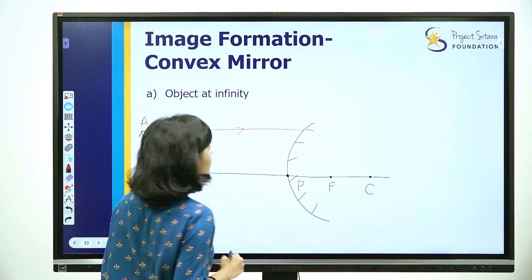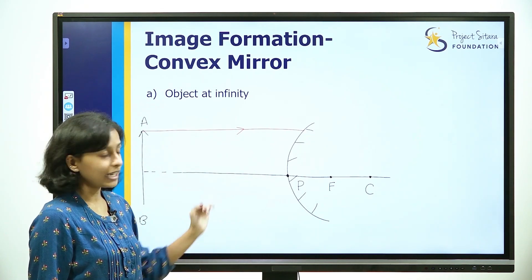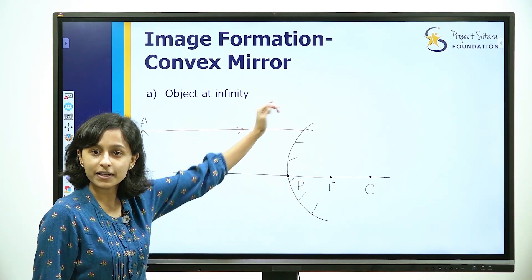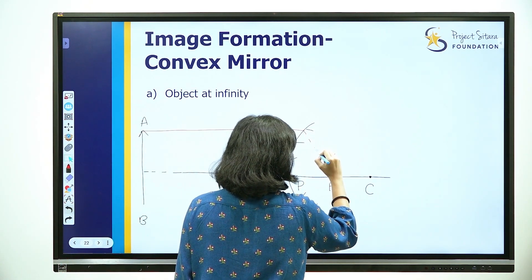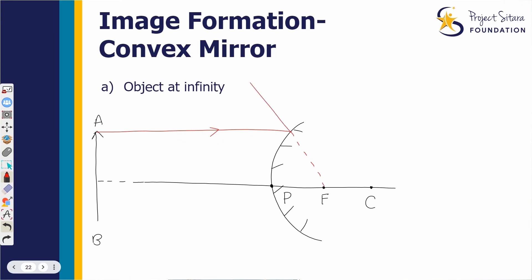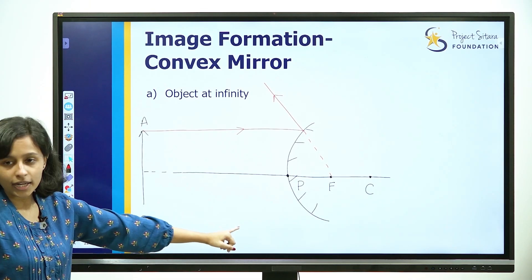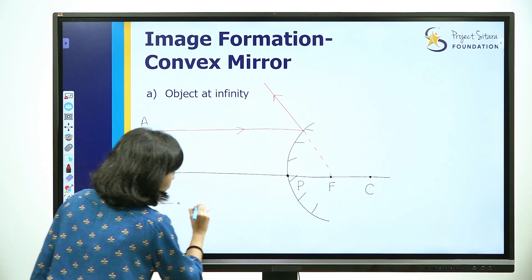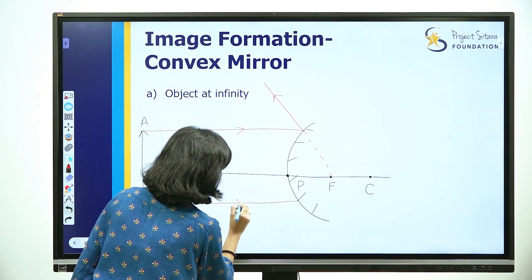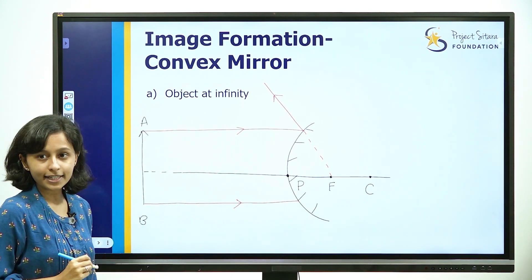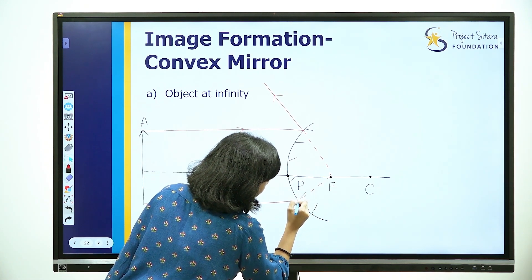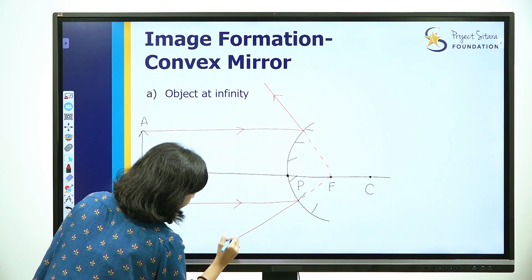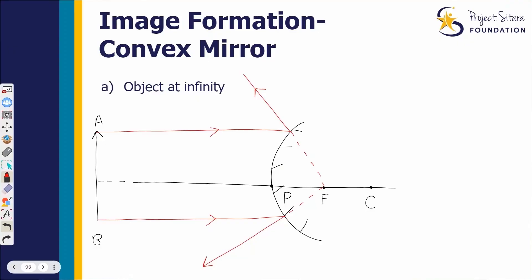The object is reflected in a convex mirror. It will appear to diverge from the principal focus. Here we have dotted lines showing that the reflected ray appears to diverge from the principal focus. The incident ray is parallel to the principal axis and the reflected ray appears to diverge. This is the reflected ray and this is the image we have.